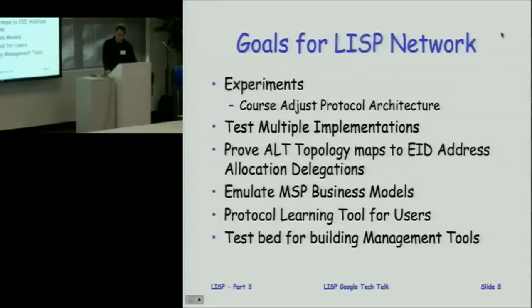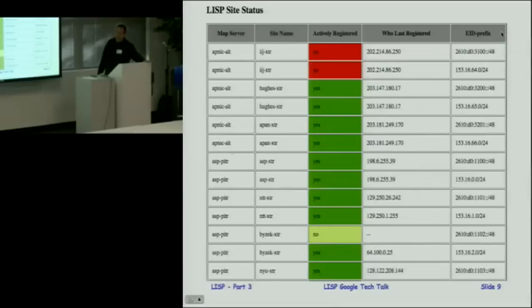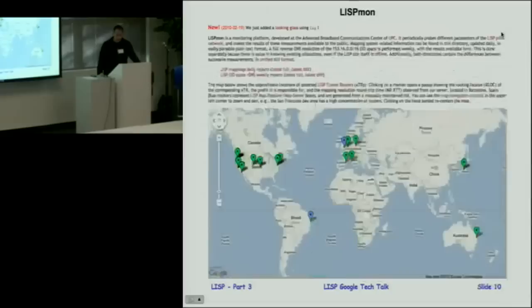The test network is a protocol learning tool — when people want to see the stuff live, we can log in and show a traceroute to demonstrate how things work. It's also a testbed for building management tools. There's a web page that links to all devices on the network showing their site, box info, registration, and EID prefixes. There's also a LISPMon tool that shows where all LISP boxes are and lets you check their status for network management.